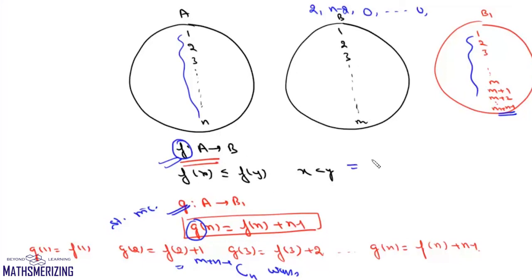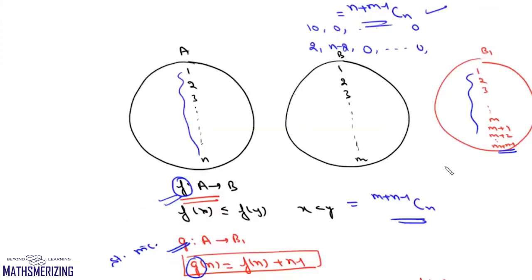So the number of non-decreasing (or non-increasing) functions from set A to set B is (M+N−1)CN. This is confirmed by both the equation-based approach and the bijection method.